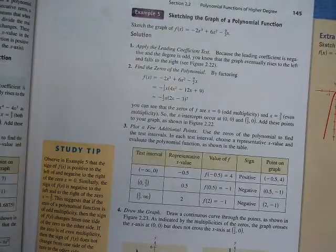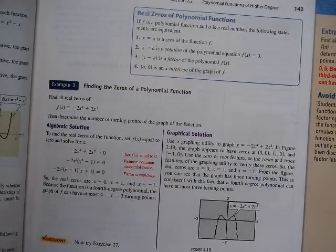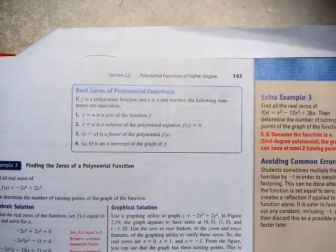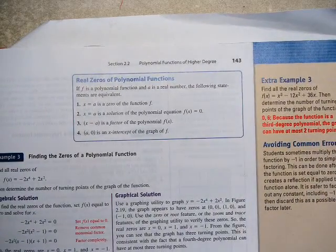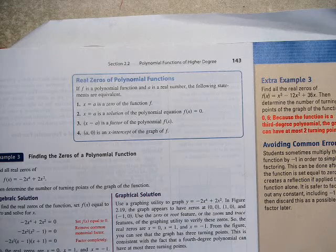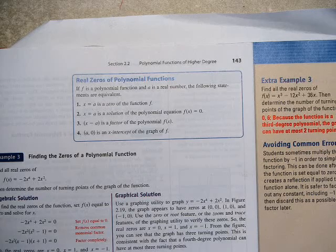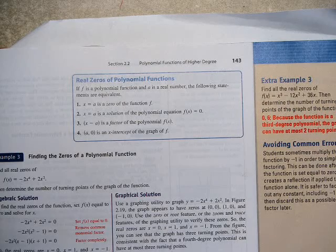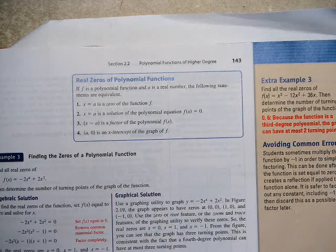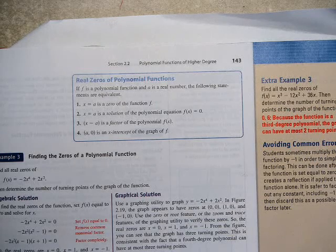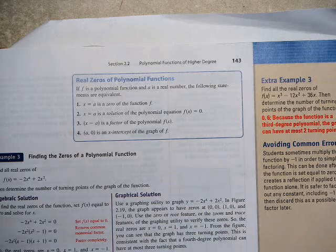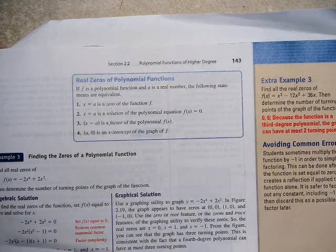We're going to move on to zeros of functions. Just having the end behavior is not enough. We need to go ahead and talk about other behaviors of functions. And basically these four things are very important for you to understand. Real zeros of a polynomial function. The following statements are equivalent. It means these all say the same thing. Like X equals three is a zero of the function. X equals three is a solution of the equation F of X equals zero. X minus A is a factor of the polynomial. And a zero is an X intercept of the graph.